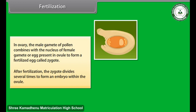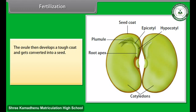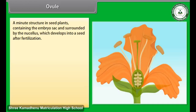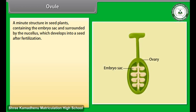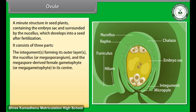After fertilization, the zygote divides several times to form an embryo within the ovule. The ovule then develops a tough coat and gets converted into a seed. The seed is the reproductive unit of a plant containing a future embryo that develops into a seedling. The ovule is a minute structure in seed plants containing the embryo sac and surrounded by the nucellus. It consists of three parts: the integuments forming its outer layers, the nucellus or megasporangium, and the megaspore-derived female gametophyte or megagametophyte in its center.